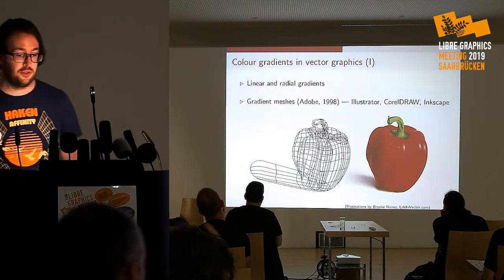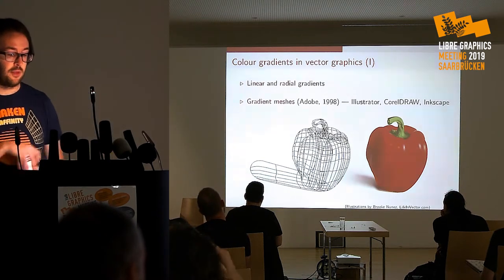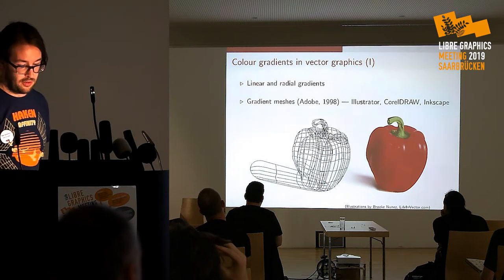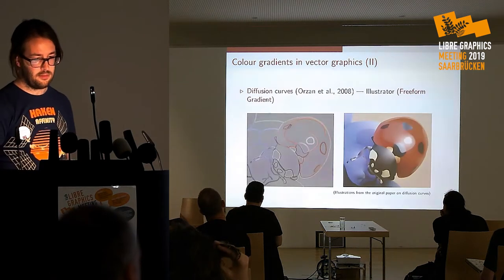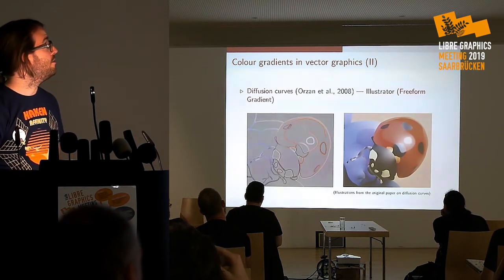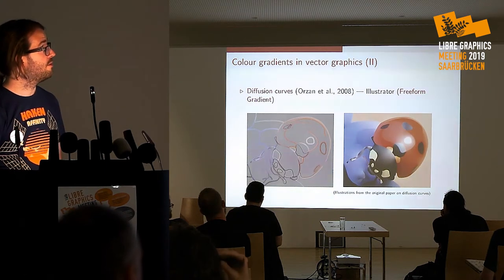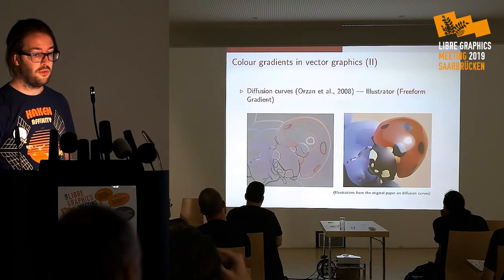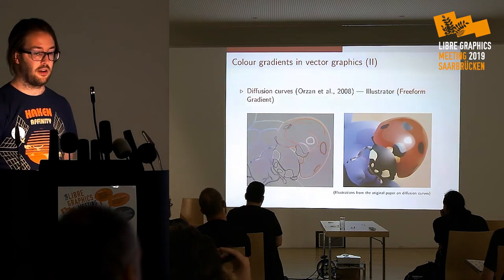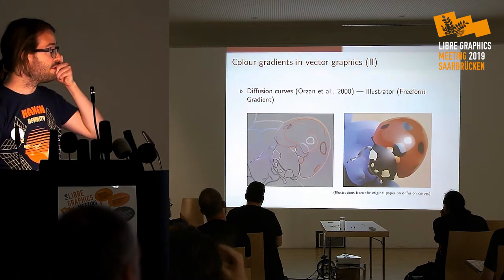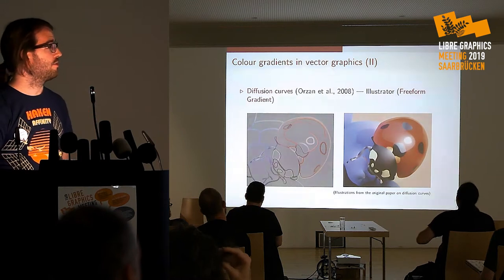Gradient meshes are one of the ways to do color gradients in vector graphics. Then about 10 years later, an alternative was proposed: diffusion curves, which work in a fundamentally different way. Although both methods have their intersections, let's say. Both methods are heavily based on curves — clearly diffusion curves is based on curves, and your gradient meshes are basically curved networks that you assign colors to. So curves — well, that brings us to Bezier curves.